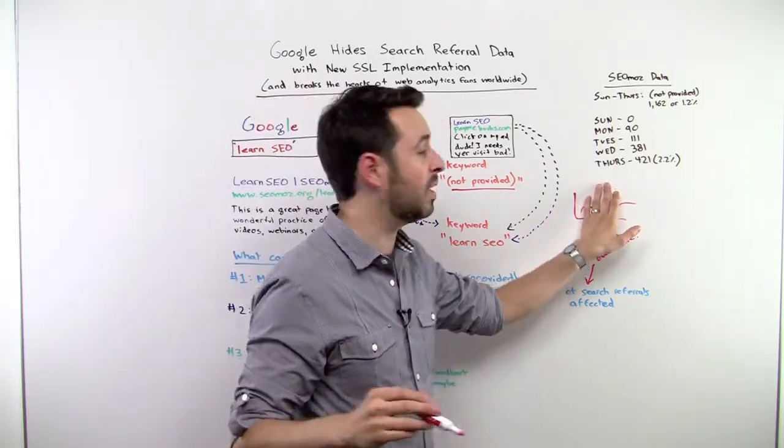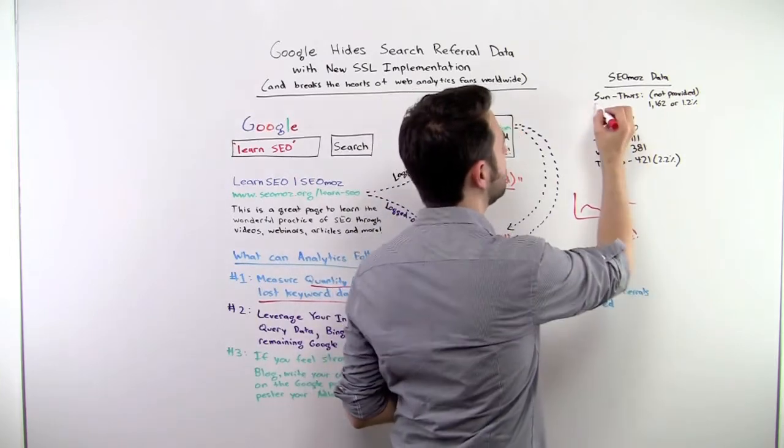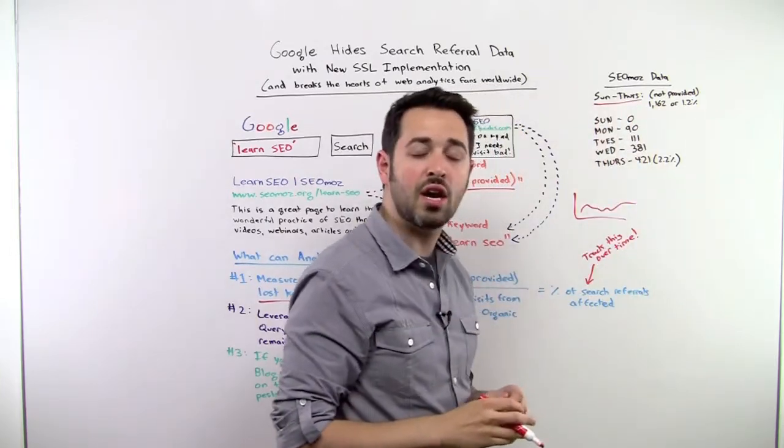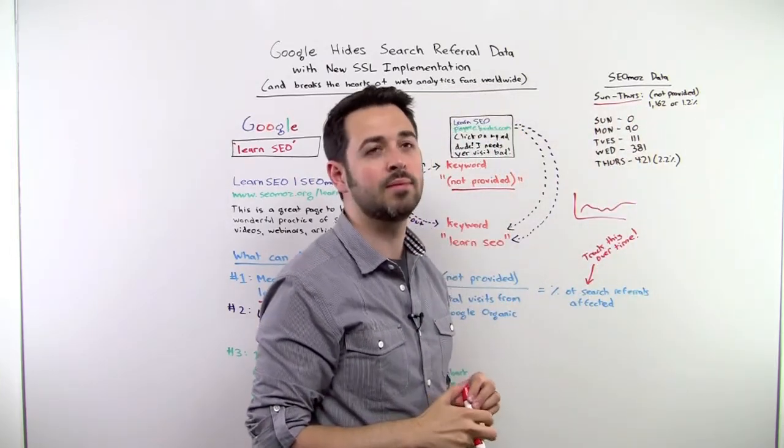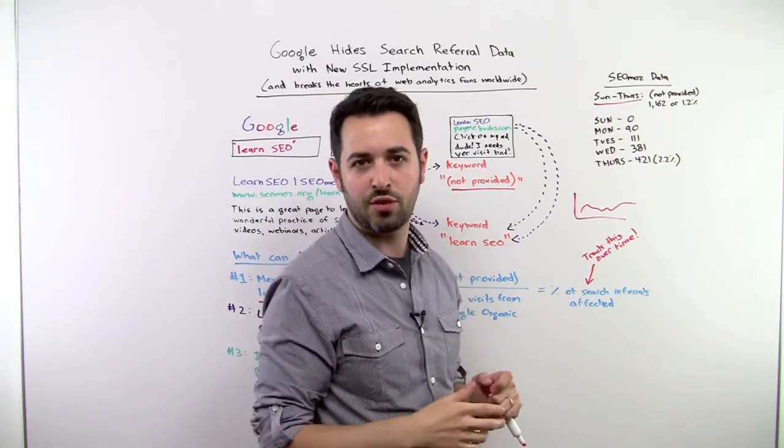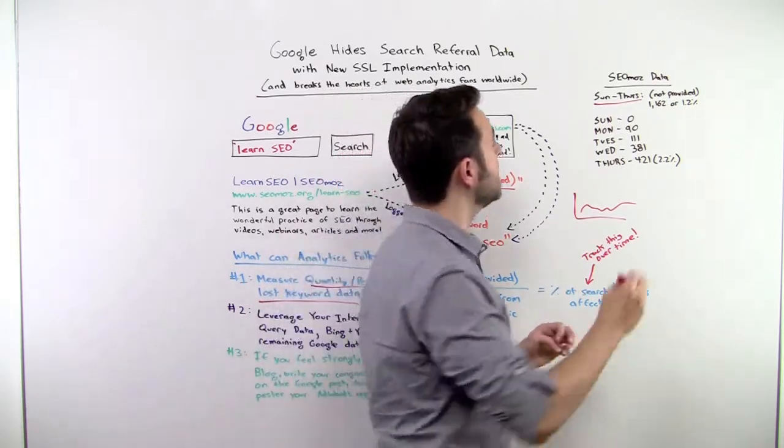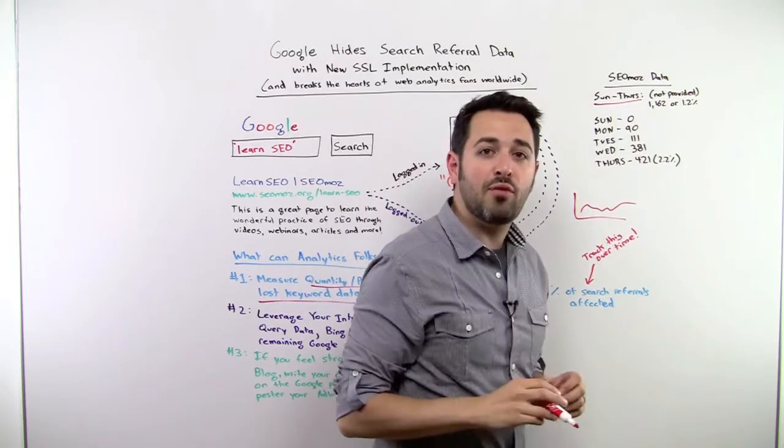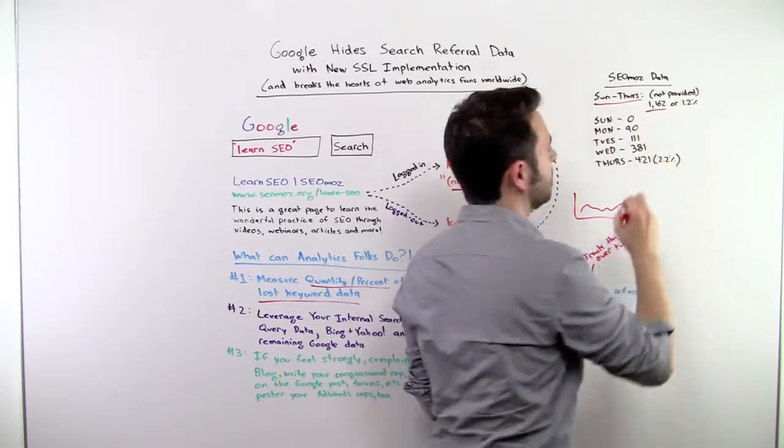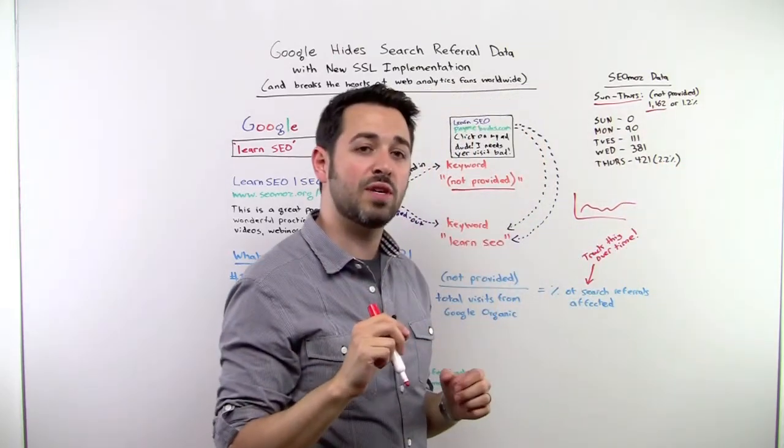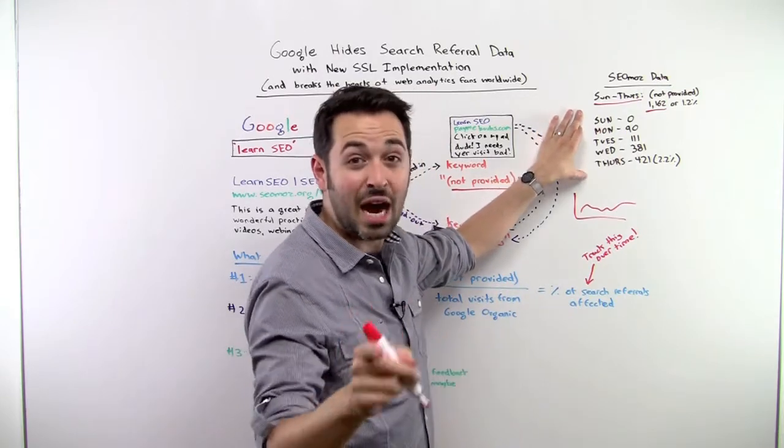You can see some data from SEOmoz. Let's take a look at our own data. This is from Sunday to Thursday of this week, so ending yesterday. We're filming this on Friday for release tomorrow, Saturday. You can see not provided was 1,162 or 1.2% of the visits over these five days.